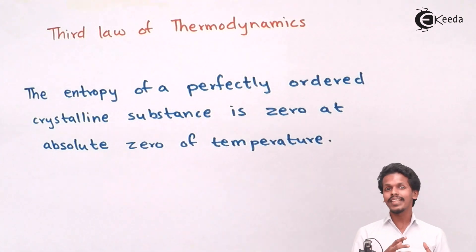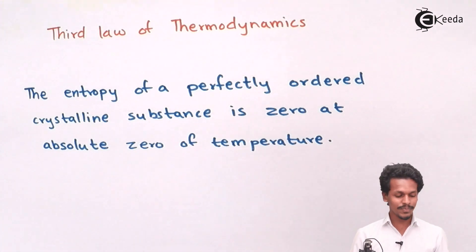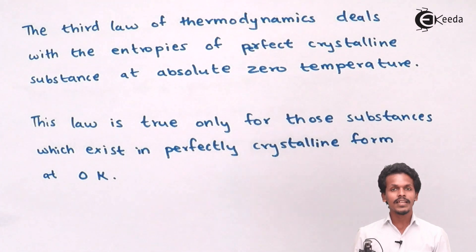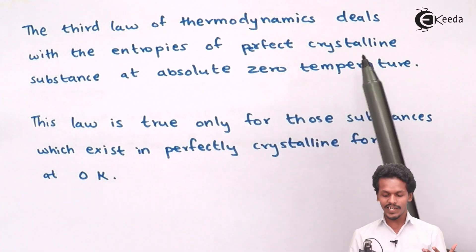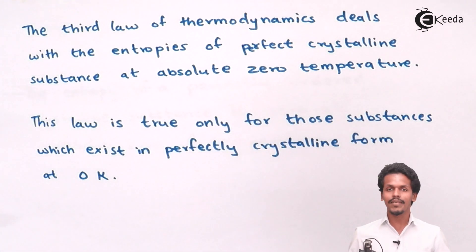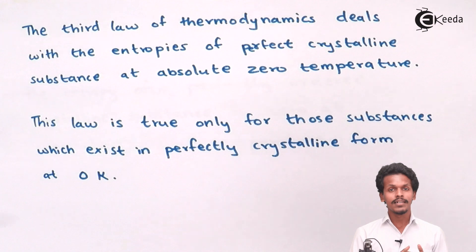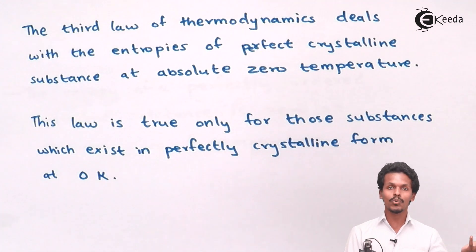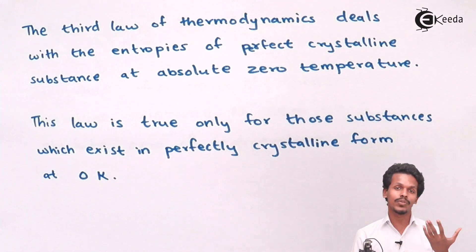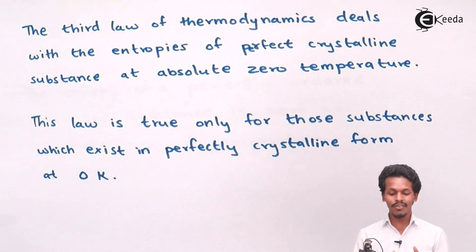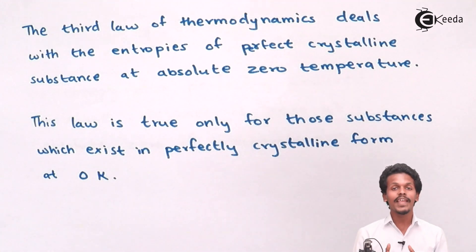There are a few more explanations based on the third law of thermodynamics. The third law deals with the entropies of perfectly crystalline substances at absolute zero temperature. Unlike the first and second laws, which were related to entropy changes and enthalpy of reactions or heat energy, the third law is specifically concerned with the entropy of a pure crystalline substance at zero temperature.